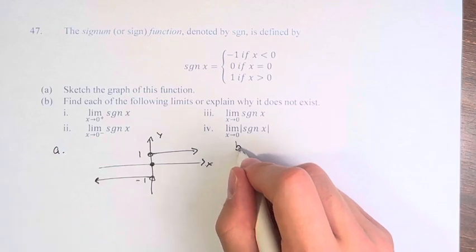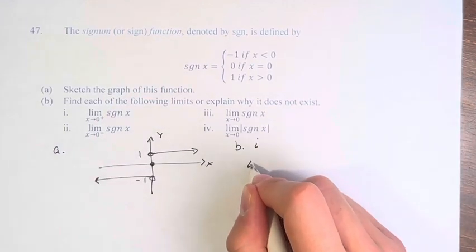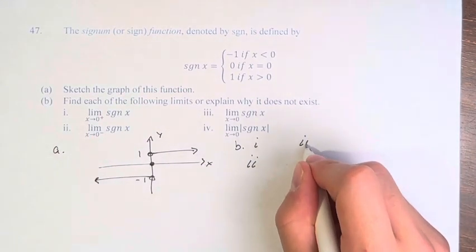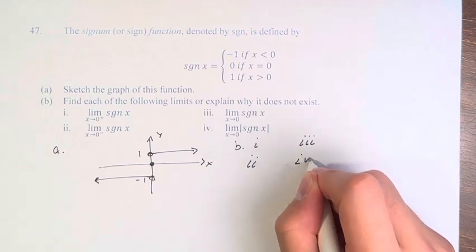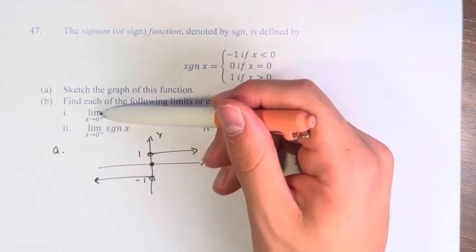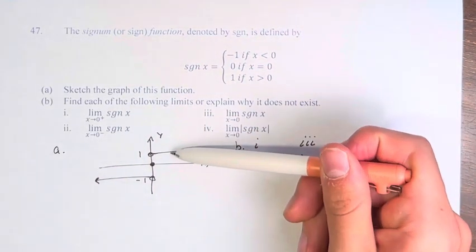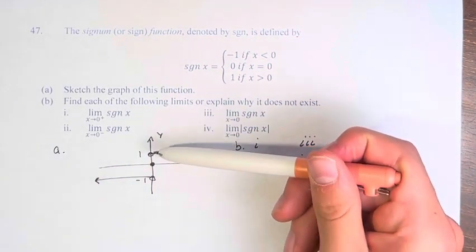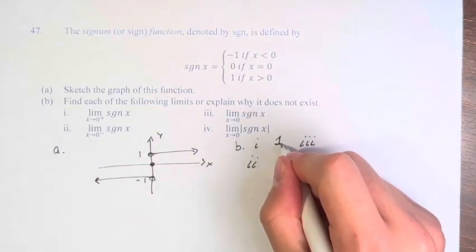And in part b we're asked to find the values of these limits. So first the limit as the function approaches 0 from the right. So we're approaching 0 and we're doing it at a value of 1. So this is just equal to 1.